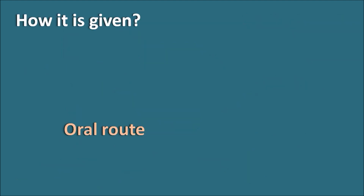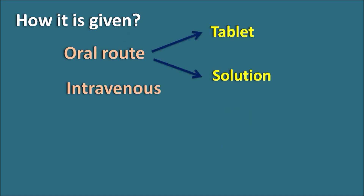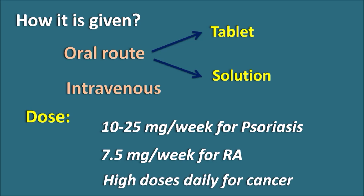Methotrexate can be given by oral route — as tablets or solution — or by intravenous route. The dose for psoriasis is 10 to 25 mg per week, given as one dose per week. For rheumatoid arthritis, it is given as 7.5 mg per week. In cancer treatment, high doses are used and can be given daily rather than weekly.